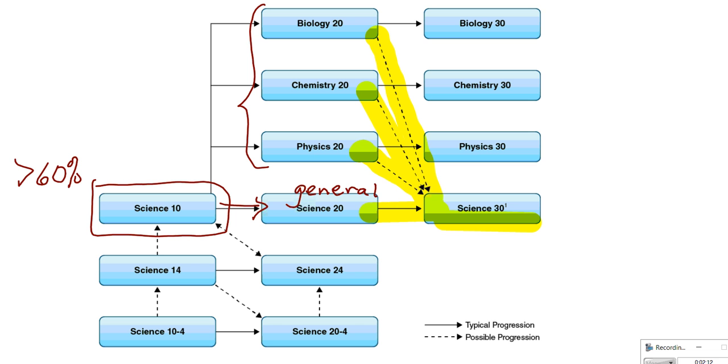In order to successfully complete any of the specialized science courses at the 30 level—chemistry, biology, or physics—we highly recommend a final grade above 65 at the 20 level. These courses are more challenging and are area-focused, so they require more commitment from the student.